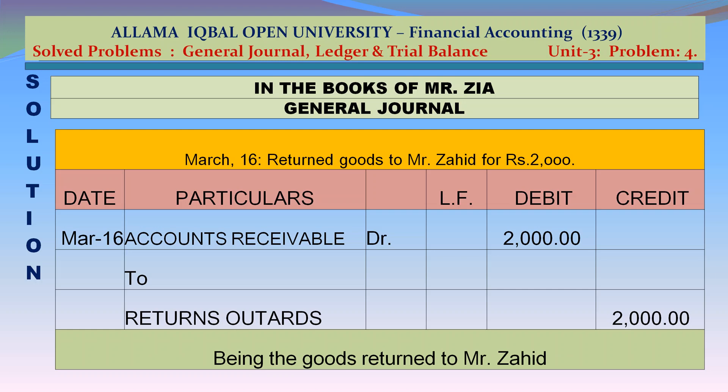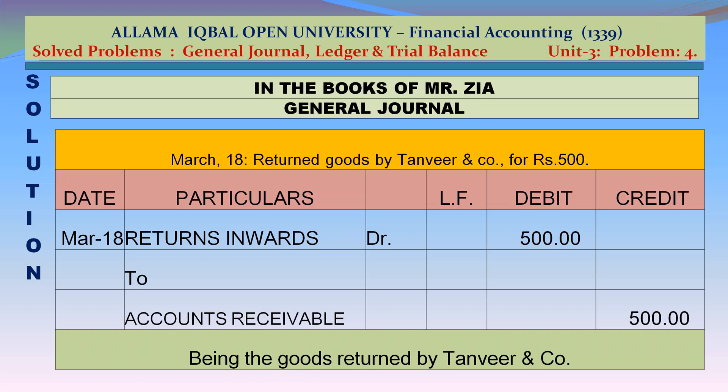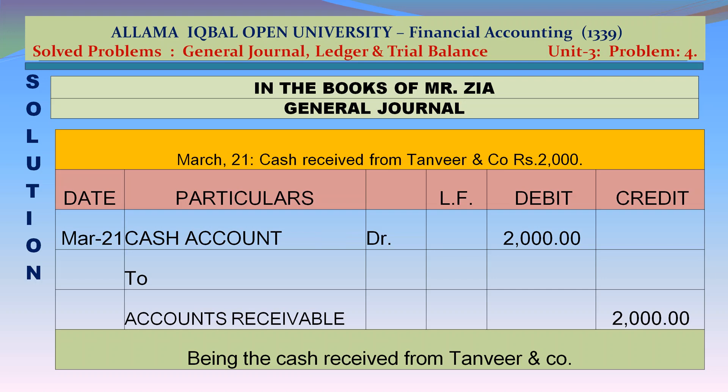March 16: Accounts payable debit Rs 2,000 to returns outwards credit Rs 2,000 — being the goods returned to Mr. Zahid. March 18: Returns inwards account debit Rs 500 to accounts receivable credit Rs 500 — being the goods returned by Tanvir & Company. March 21: Cash account debit Rs 2,000 to accounts receivable credit Rs 2,000 — being the cash received from Tanvir & Company.